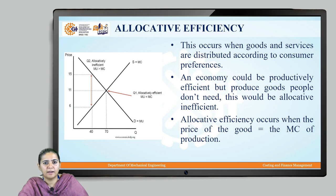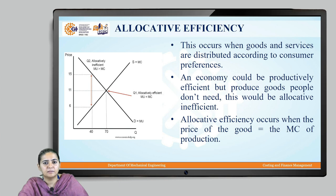Looking at another point Q2, which shows a marginal cost of rupees 15 for a quantity of 40 — much higher than the marginal cost of rupees 6 for the same quantity of 40 — there is an under-consumption of resources. So, an economy could be productively efficient and produce goods people need, but it need not necessarily be allocatively efficient.